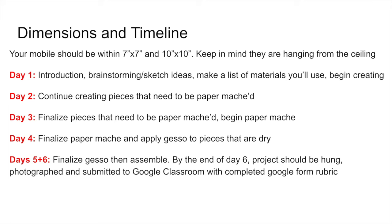Dimensions and timeline: your mobile should be within 7 by 7 to 10 by 10 inches. If it's slightly smaller, like 7 by 6, or larger, up to 12 by 12, that's fine. But I don't want you creating an itty-bitty mobile that can't be seen from a distance — push toward the larger scale when possible. Since these will hang from the ceiling, you want them at eye level or above, not at someone's waist.